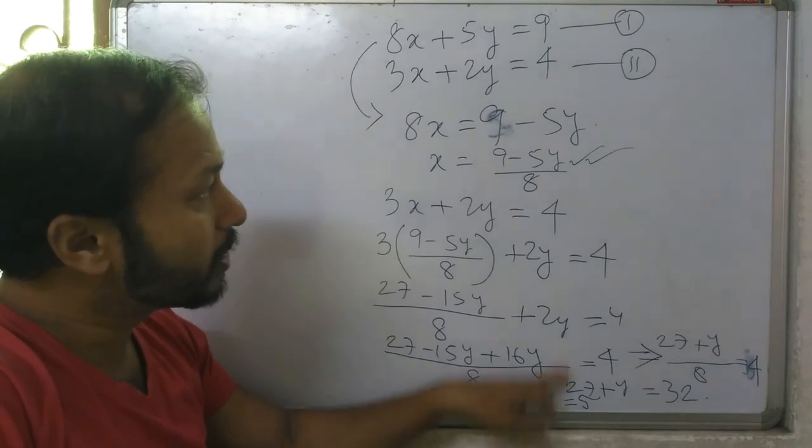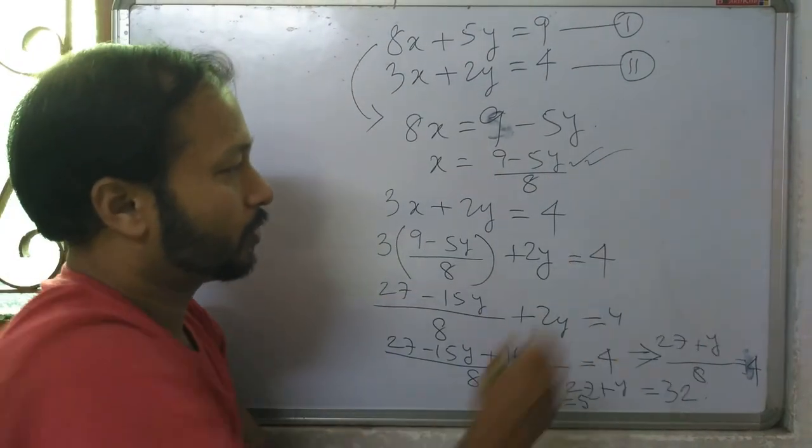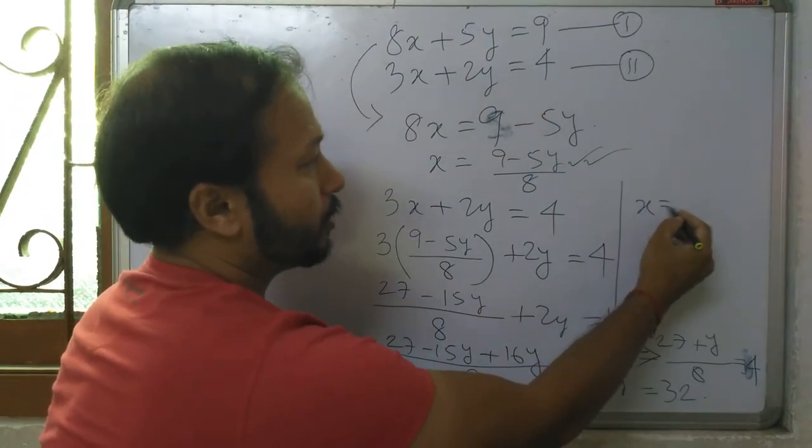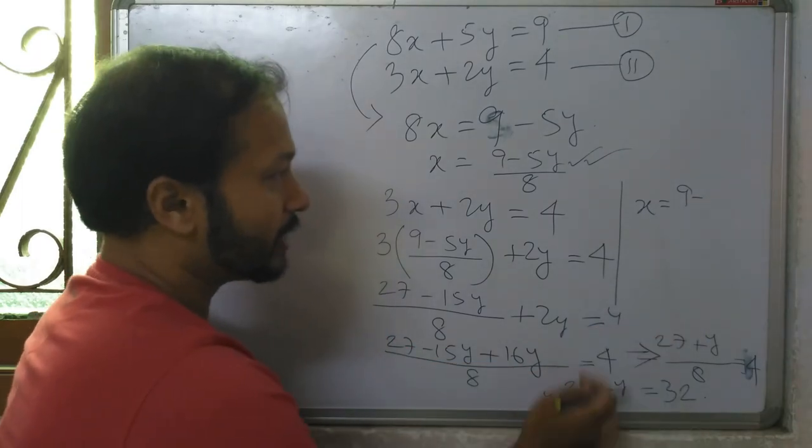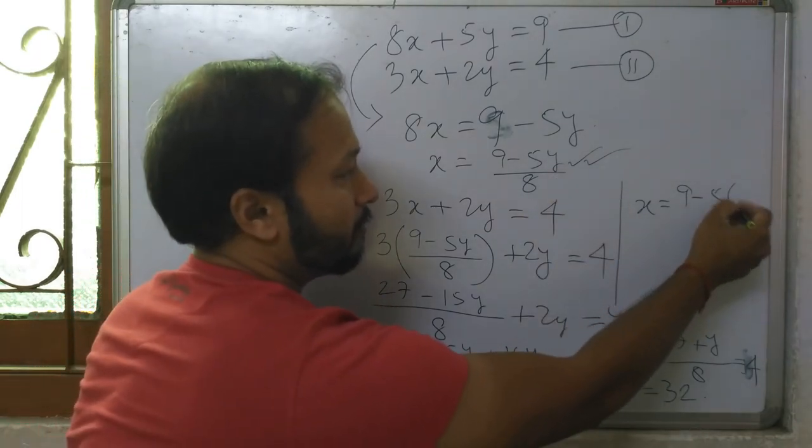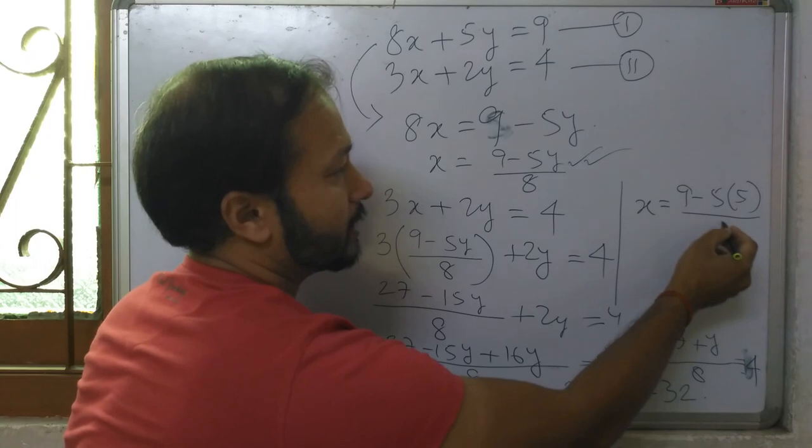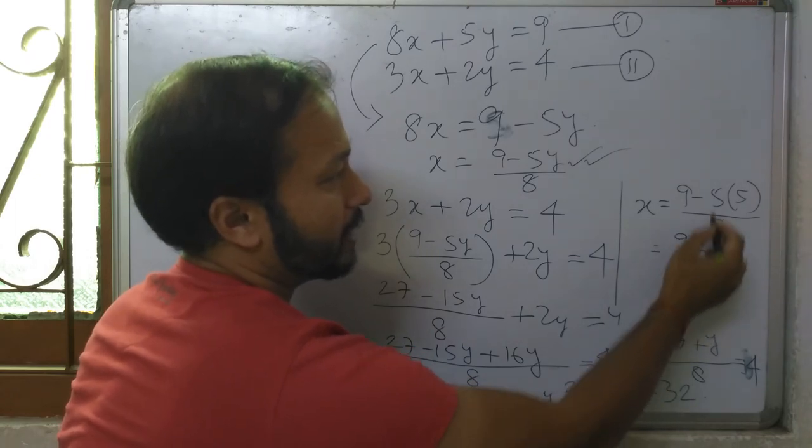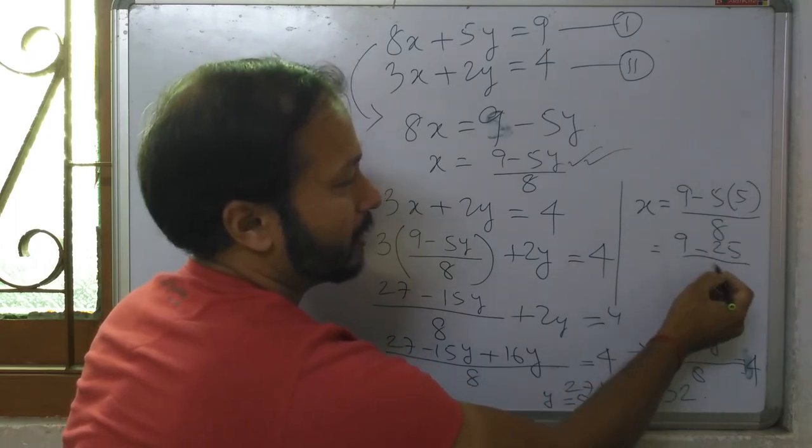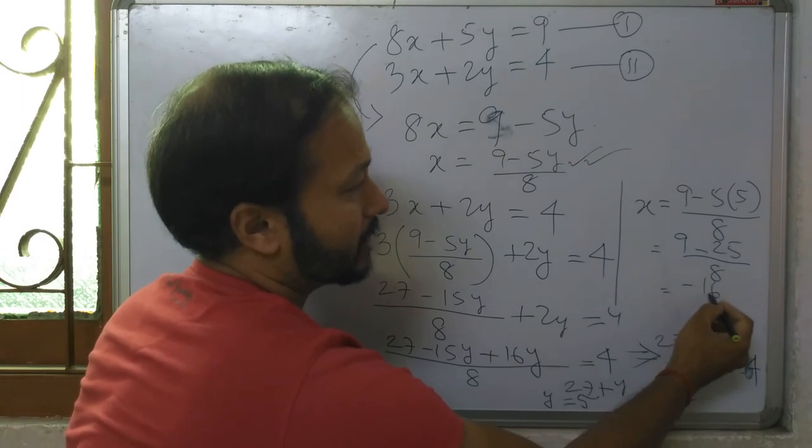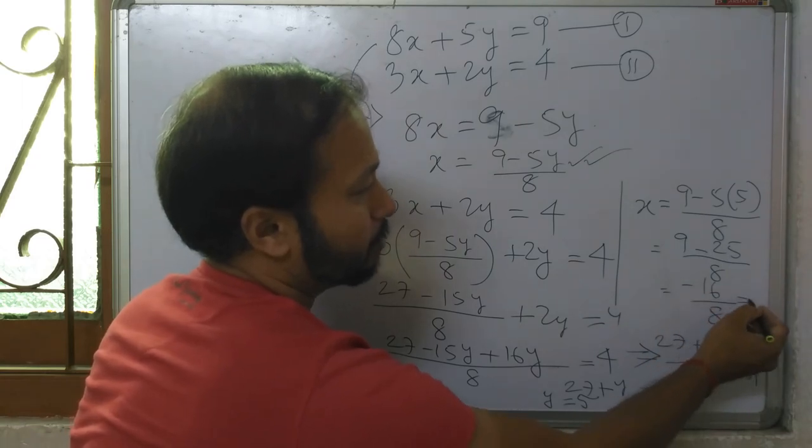Now put this y value here: x equals 9 minus y. Since y is 5, that's 9 minus 5 times 5 by 8, which is 9 minus 25 by 8, equals minus 16 by 8, that is minus 2.